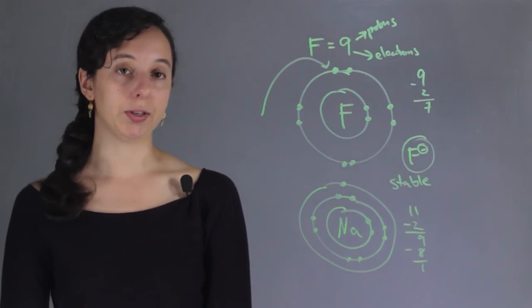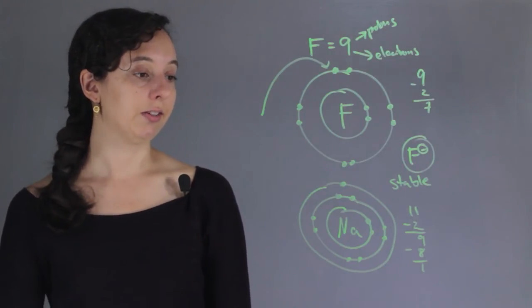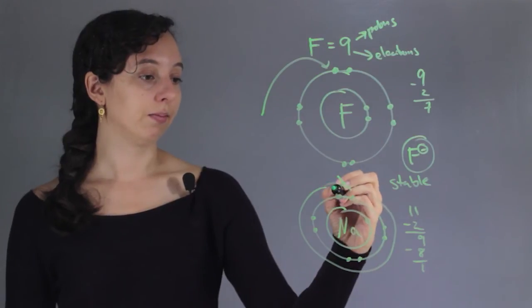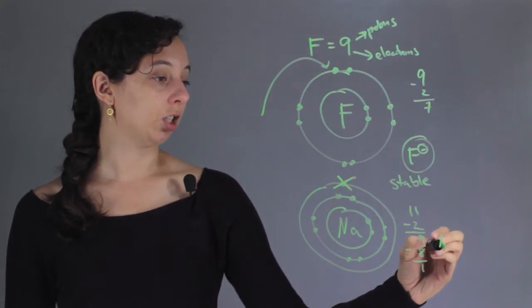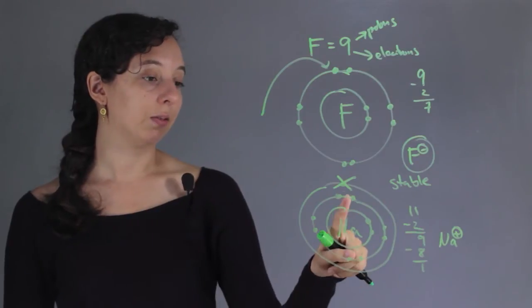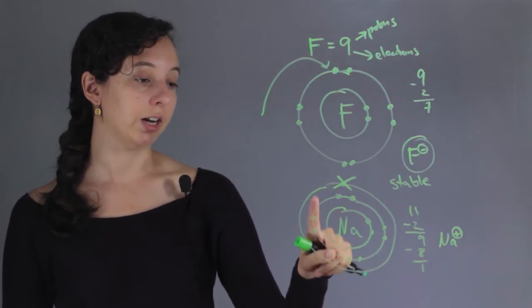It wants to lose an electron. If it loses its electron, it'll become positively charged, and it will have a complete full valence shell down here.